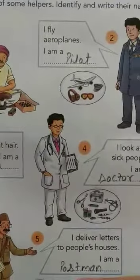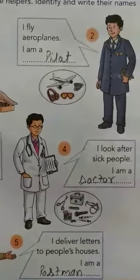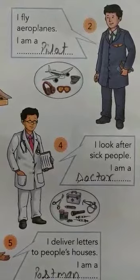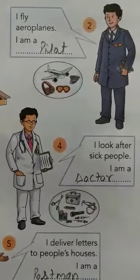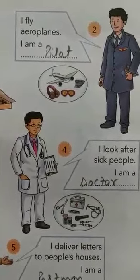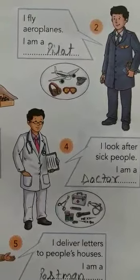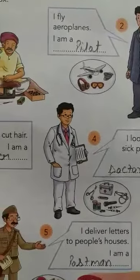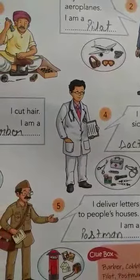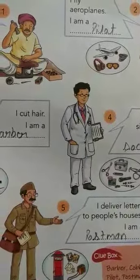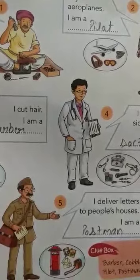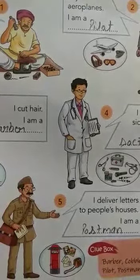Number four: 'I look after sick people.' Who treats sick people? Doctor. So the answer is: I am a Doctor. And number five: 'I deliver letters to people's houses.' So the answer is: I am a Postman.